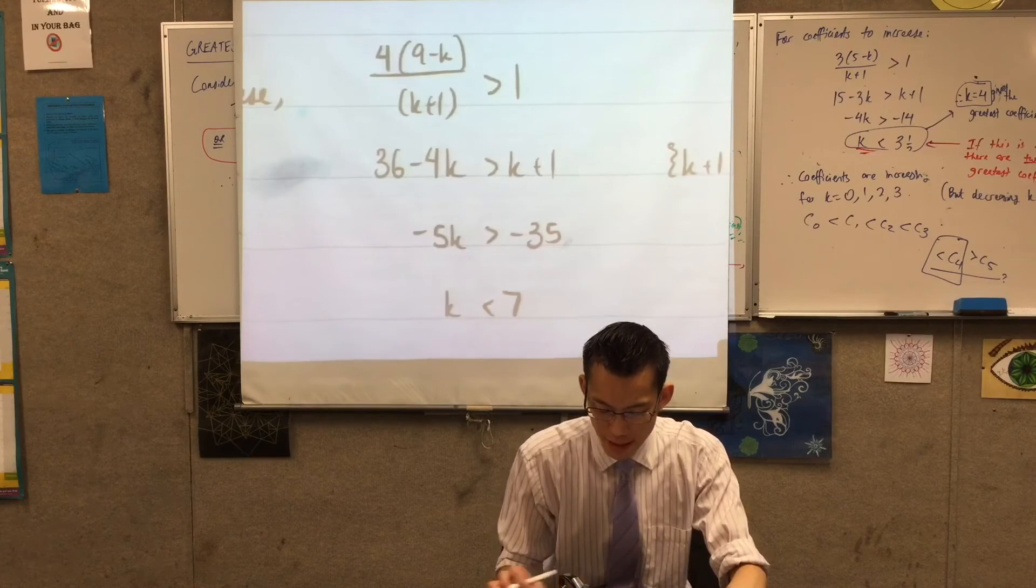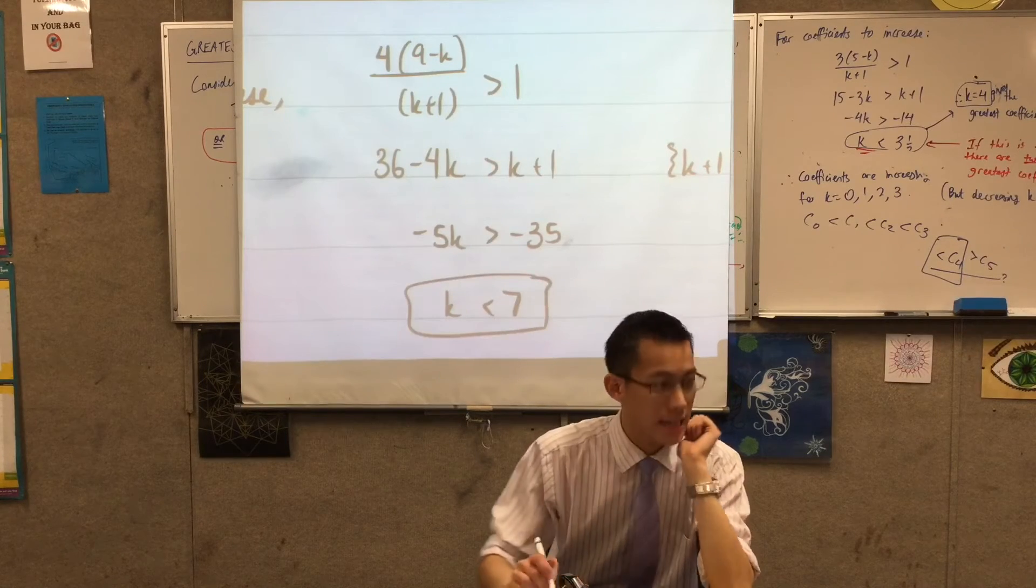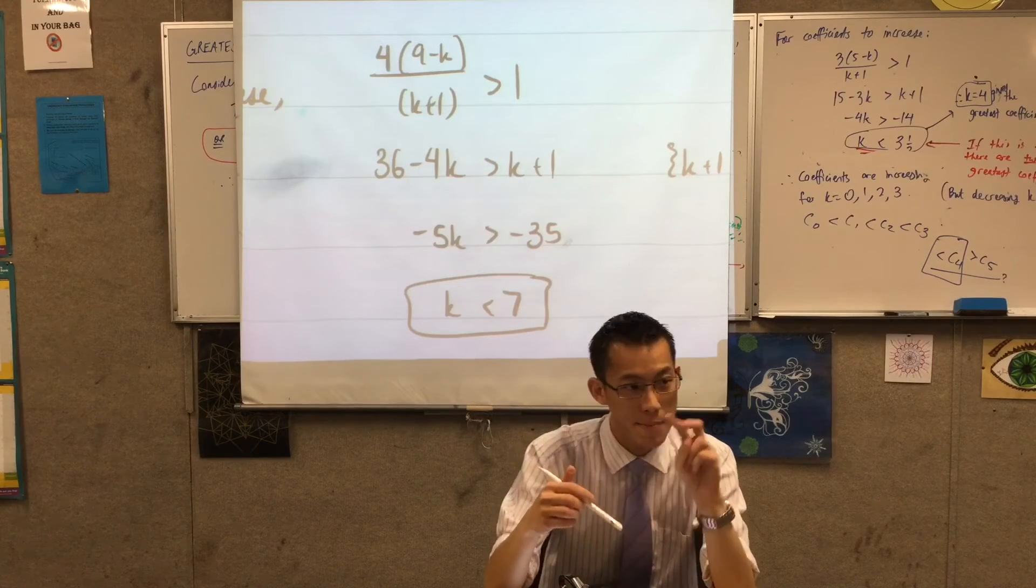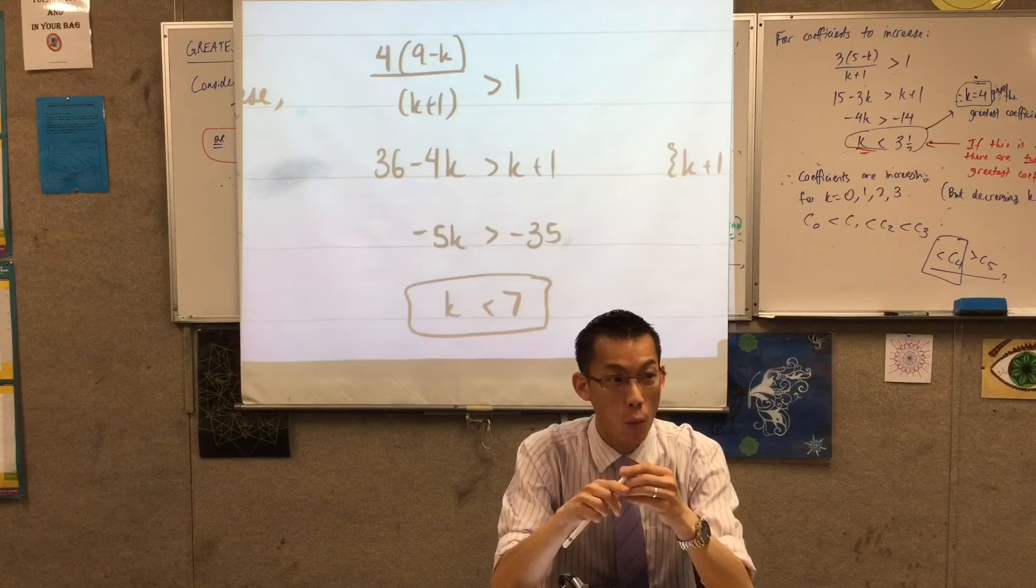Right, now remember I said to you if this thing actually lands on an integer, that means you don't just have one greatest coefficient, it means you've got two. Now I want you to think about why that is the case.